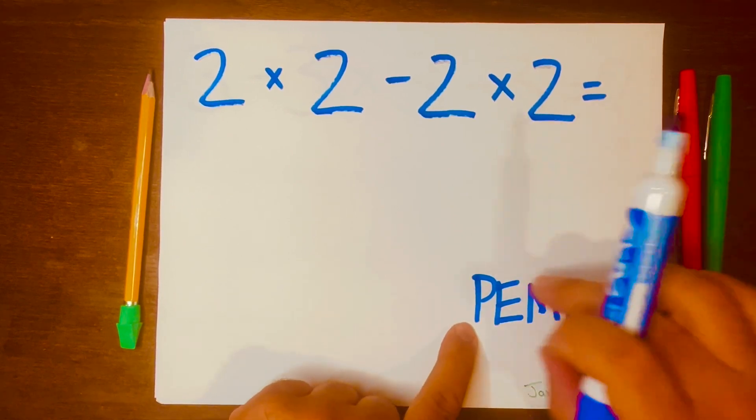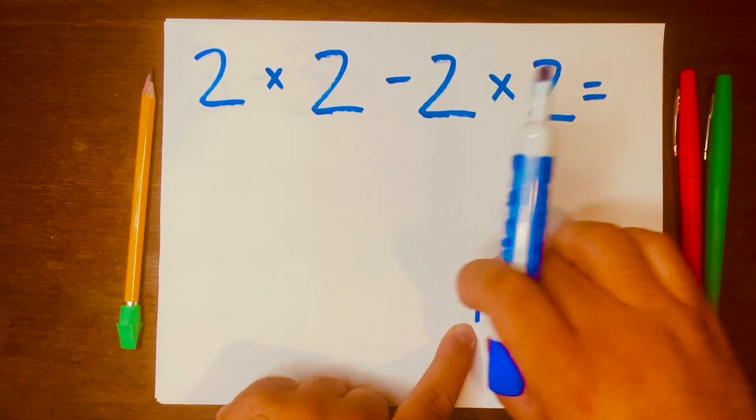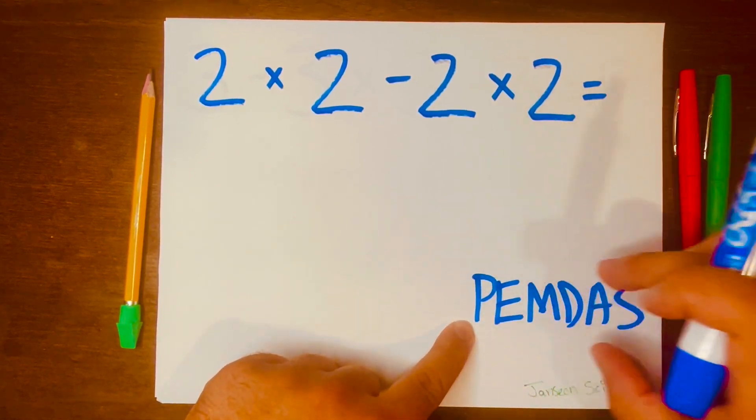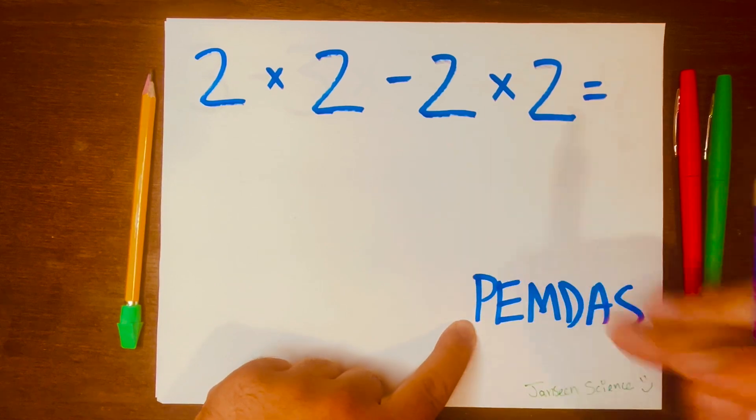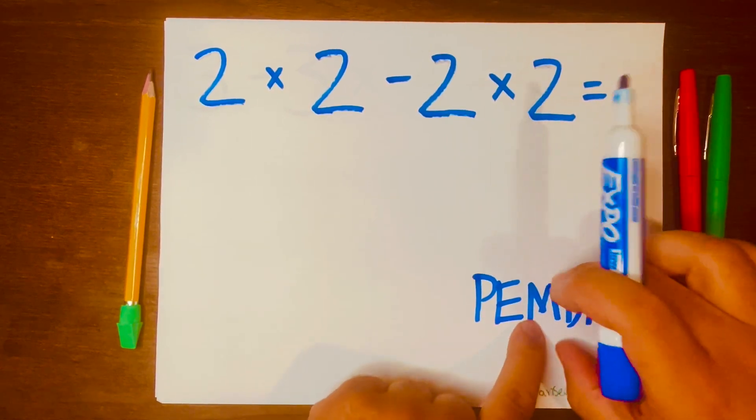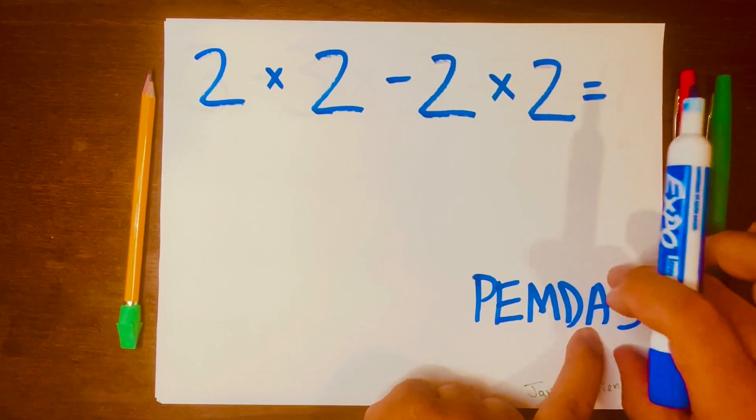Some people forget that these letters are split into four different levels. P has its own level, E has its own level, MD has its own level, and lastly AS has its own level.